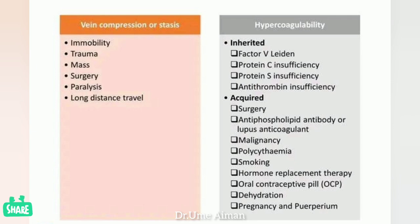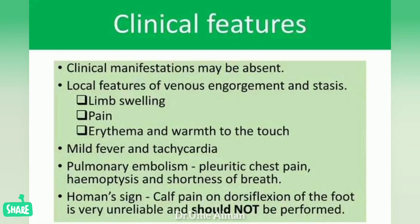Hypercoagulability may be inherited or acquired. Inherited causes involve Factor V Leiden, Protein C insufficiency, Protein S insufficiency, and antithrombin insufficiency. Acquired causes involve surgery, antiphospholipid antibodies, lupus anticoagulant, malignancy, polycythemia, smoking, hormone replacement therapy, oral contraceptive pills, dehydration, pregnancy, and the puerperium period.